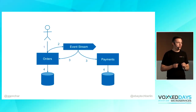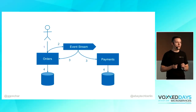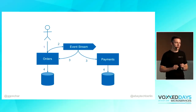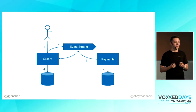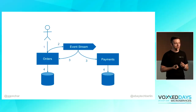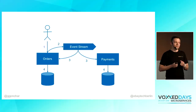At eBay Classifieds, especially in the motors vertical, we heavily rely on this solution — we use Kafka as a single source of truth in many places. For instance, we publish a listing — a car, a cat, or whatever the customer wants to sell — and then other services update their own view based on that.